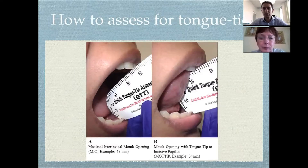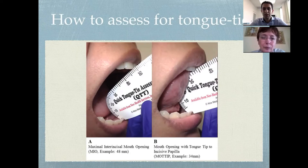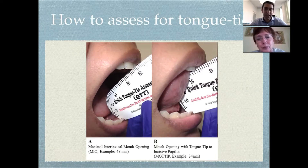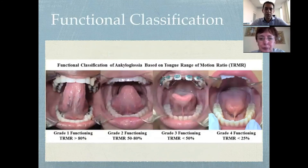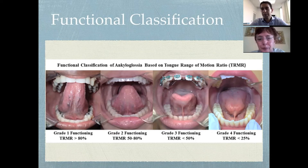We published a study to assess for tongue tie based on the work of Audrey Yoon, Stanley Liu, myself, and Christian Damino, in which we evaluate tongue tie based on the percentage of tongue mobility as a comparison to mouth opening. In example A, the patient is asked to open their mouth all the way — the maximal intraoral mouth opening is 48 millimeters. Then we ask them to put their tongue to the tip of the incisive papilla, and in this example it's 34 millimeters. The ratio of 34 to 48 gives a measurement of about 70%, so their tongue mobility is 70%, or grade two functioning. We consider less than 50% tongue mobility to be abnormal; less than 50% functioning would be criteria for functional ankyloglossia.